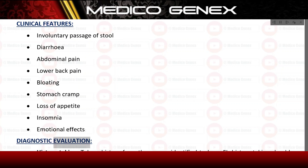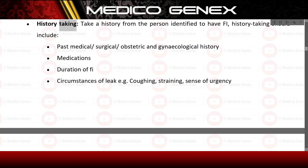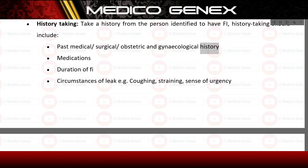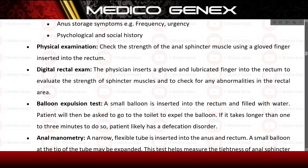Diagnostic evaluation — history taking. Take a history from the person identified to have fecal incontinence. This should include past medical, surgical, obstetric, and gynaecological history; medications; duration of fecal incontinence; circumstances of leak such as coughing, straining, or sense of urgency; urinary storage symptoms such as frequency and urgency; and psychological and social history.